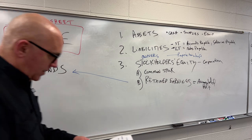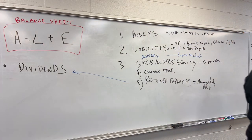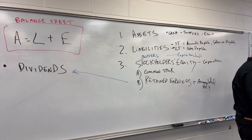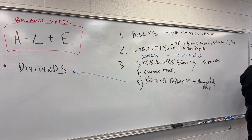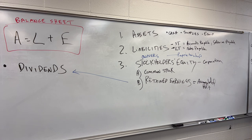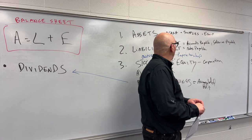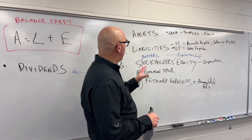Accounts payable is when a supplier sells you parts and gives you a month or two to pay — that relationship is an accounts payable. Notes payable is your car or home loan — that is a note from the bank's perspective, a notes payable. Revenue is revenue, and expenses can include advertising, rent, and so on — a company can have accounts for all of these.